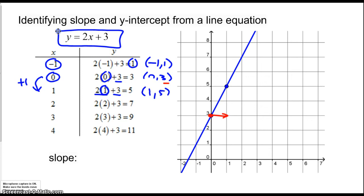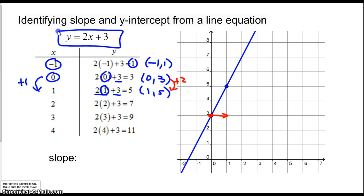When I increased x by 1, y went up by 2. From 0,3 to 1,5 — increase x by 1, y goes up by 2. Then to 2,7 — increase x by 1 again, y goes up by 2 again. Every time I increase x by 1, I go over 1, and my y goes up by 2.